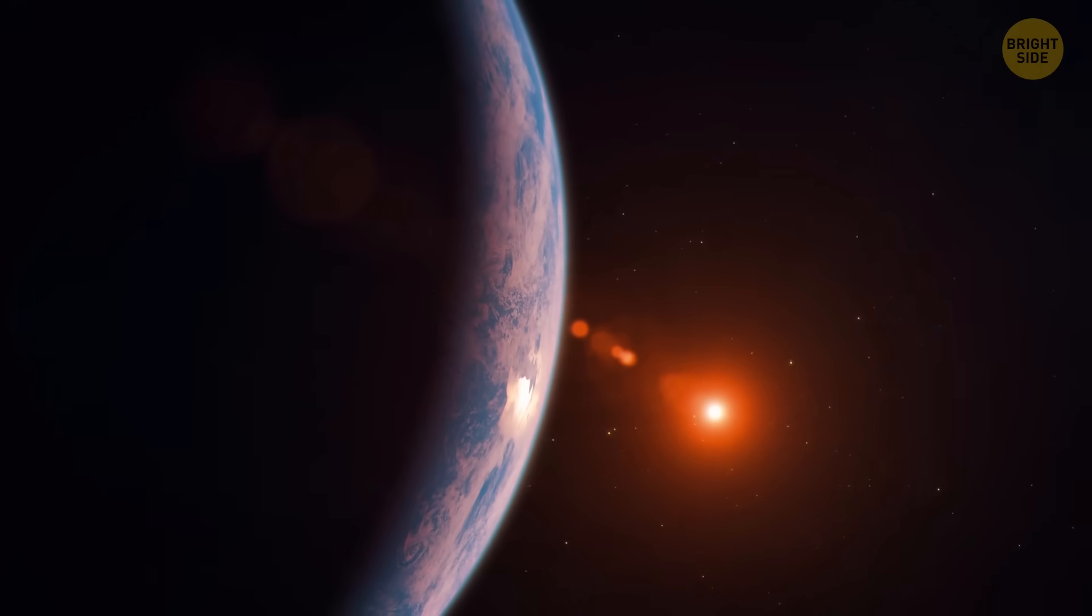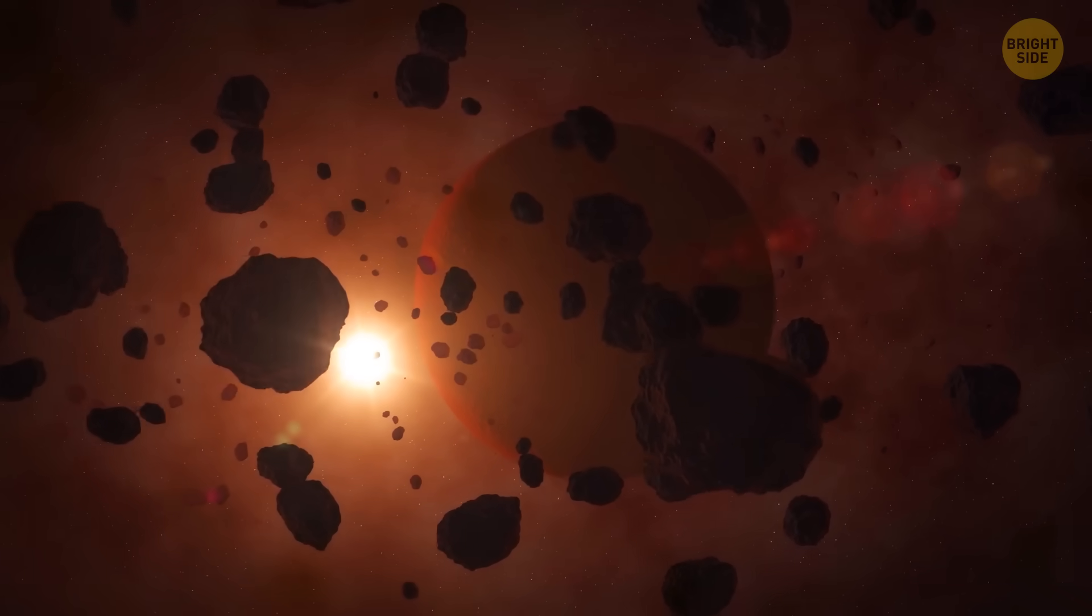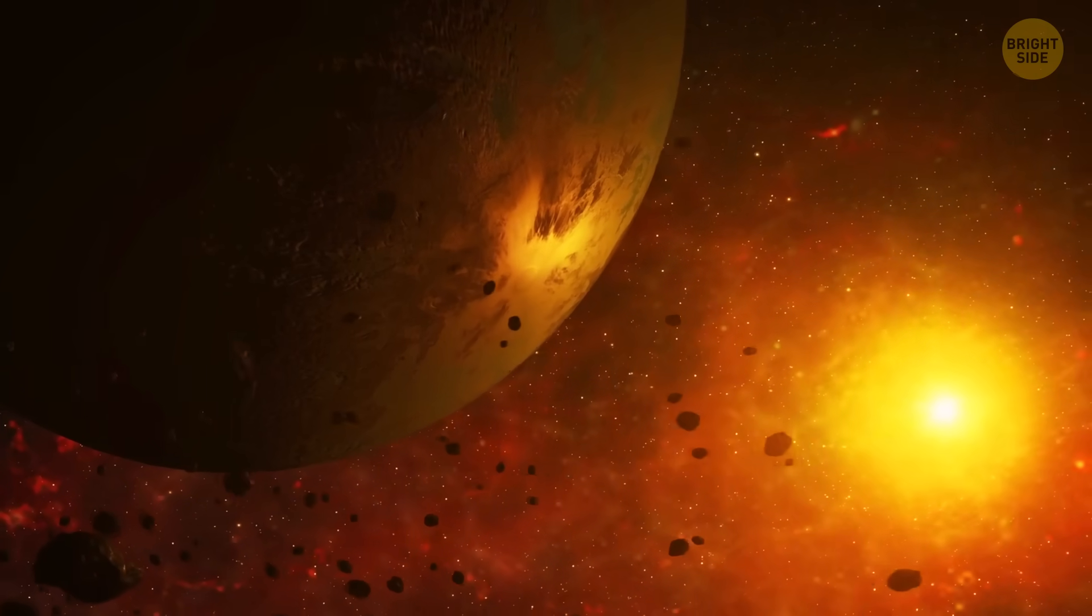Comets, planets, and other celestial objects. And of course, some of those pieces become comets and planets like the ones in our own solar system.